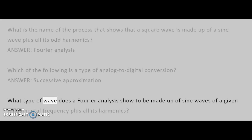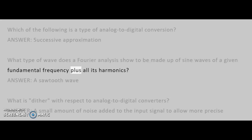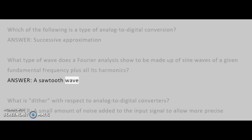What type of wave does a Fourier analysis show to be made up of sine waves of a given fundamental frequency plus all its harmonics? Answer: A sawtooth wave.